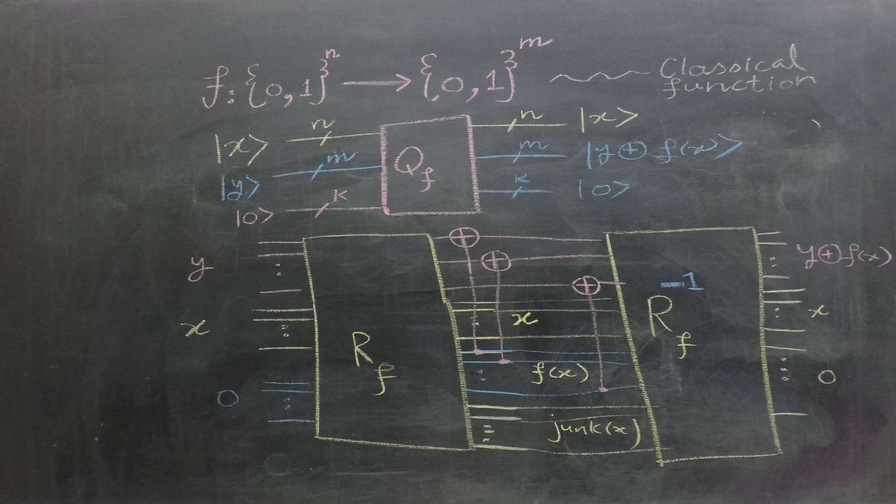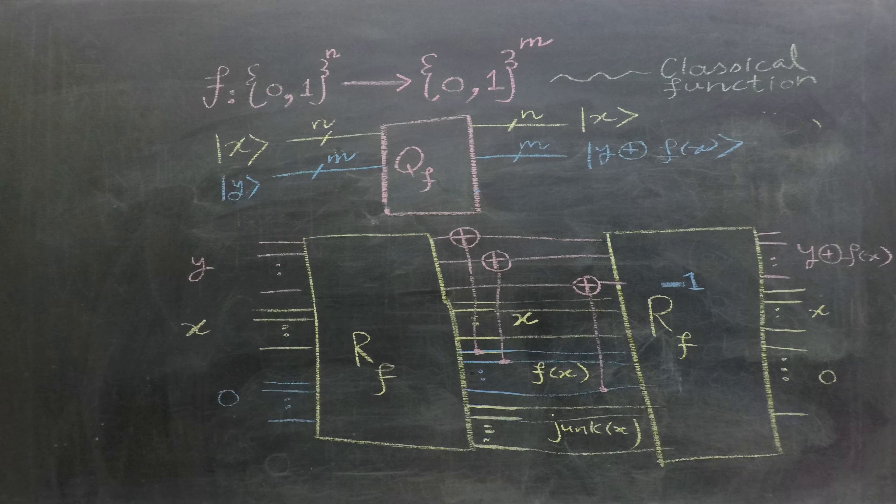For simplicity, we can omit mentioning the zeros both at the input and the output, focusing on the primary component of the quantum circuit. Let's clarify our concept with some examples.